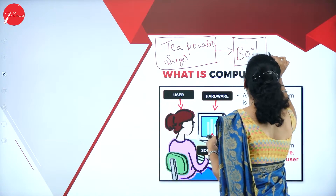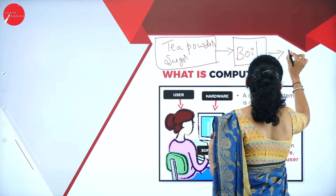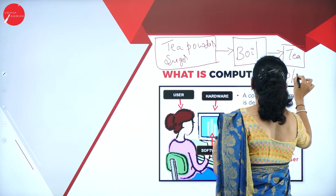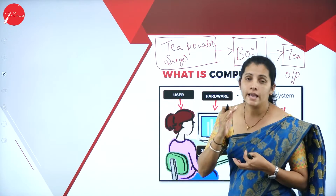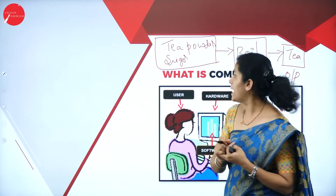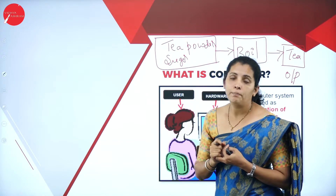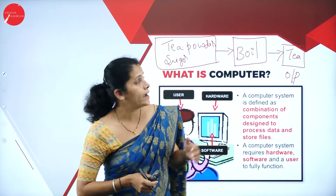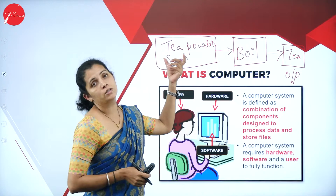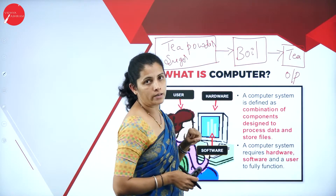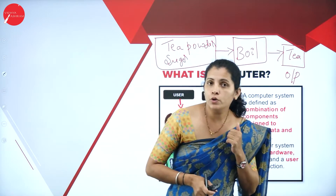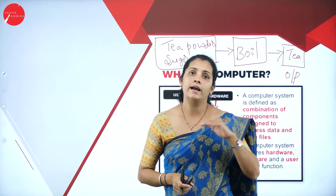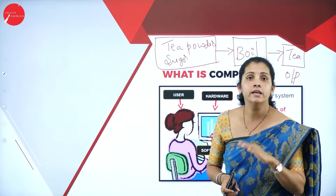I am going to boil these ingredients — that is nothing but the processing of data. After boiling, what am I going to get? I am going to get the tea, and here the tea is nothing but the output. So: tea powder, sugar, milk, and water are the input; boiling is the processing; and tea is the output.